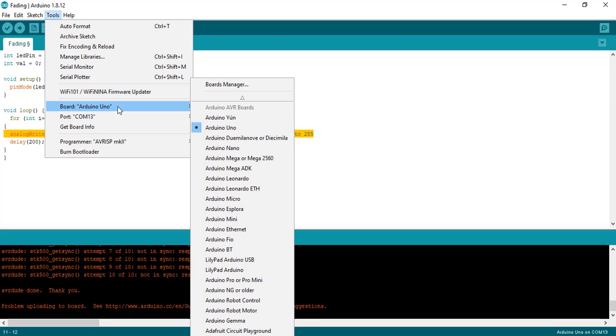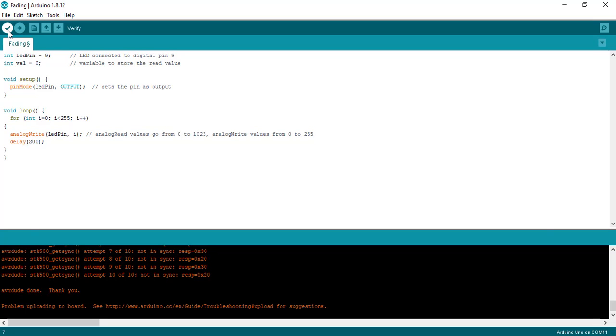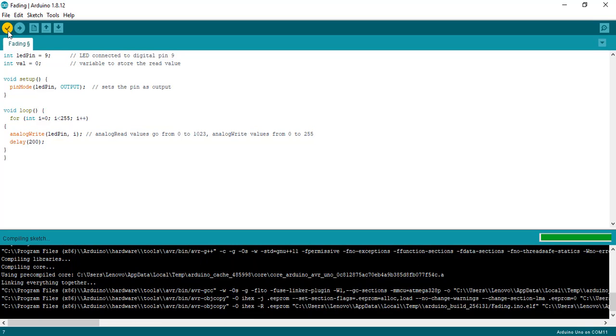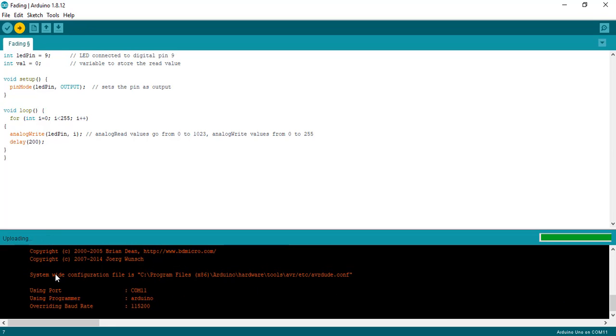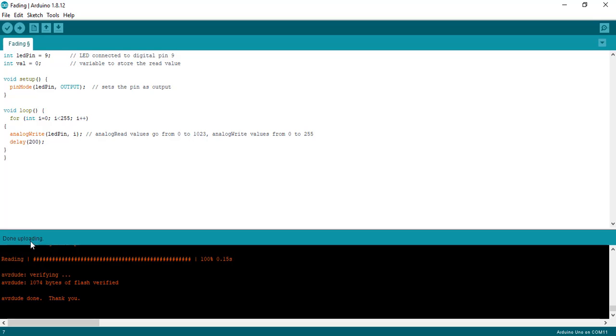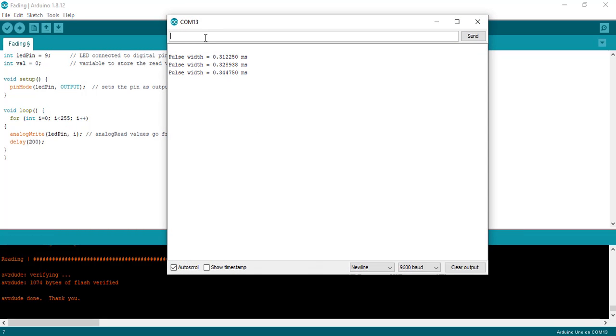First select USB to Serial Converter COM pin. After that open Serial Monitor. As you can see the code is uploaded.